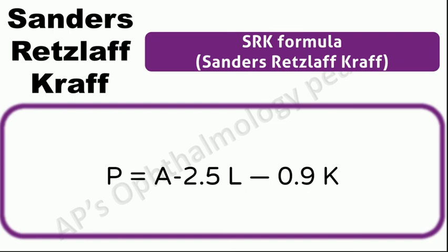SRK formula: P = A − 2.5L − 0.9K, also called the Sanders-Retzlaff-Kraff formula. P is the calculated power of the IOL in diopters. A is the manufacturer's constant, which for the most common type of IOL is 118.2. L is the axial length of the eye in millimeters measured with A-scan ultrasonography. K is the corneal curvature in diopters measured by a keratometer. The two parameters required to calculate IOL power are the axial length and the corneal curvature.